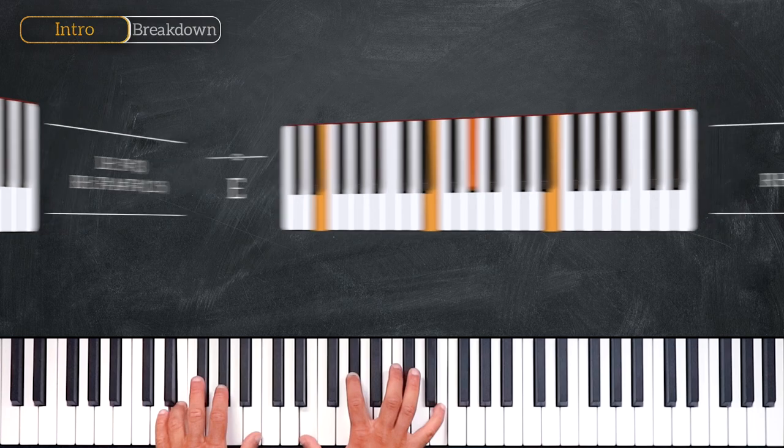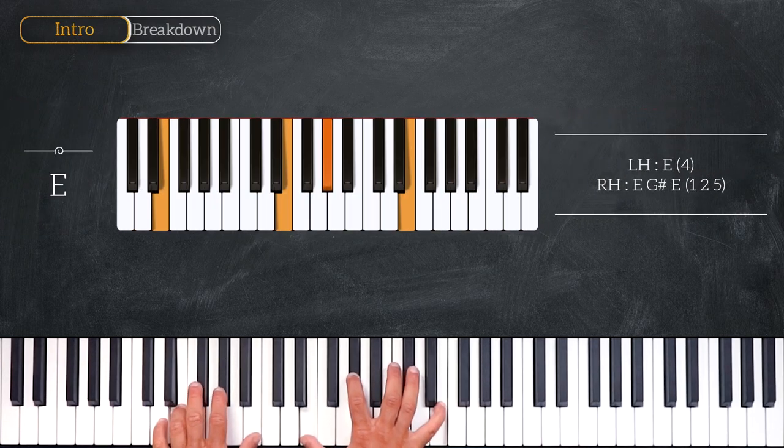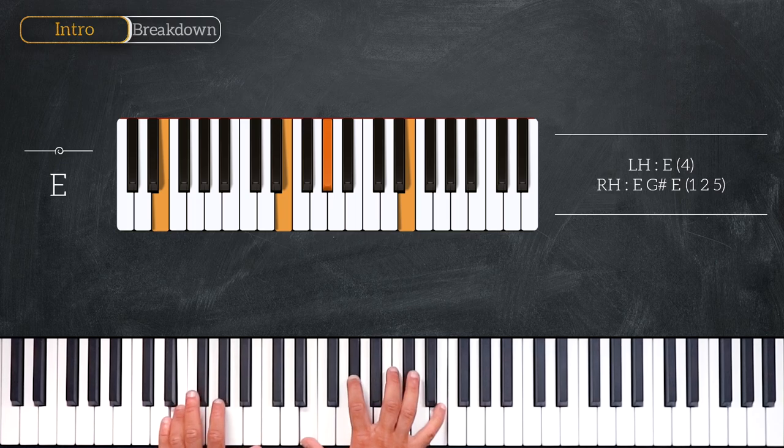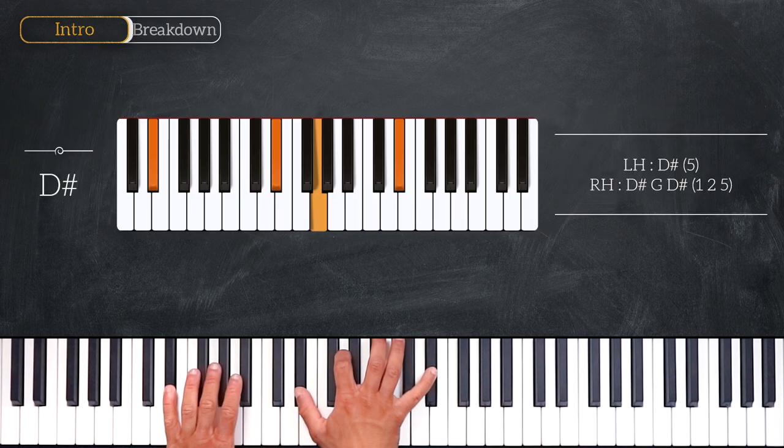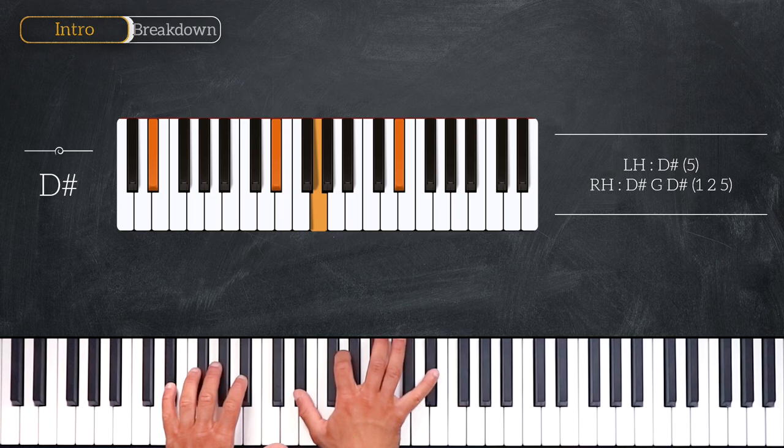Right after we'll play this E-major chord playing E on the left, E, G-sharp, E on the right hand. And we'll finish on this D-sharp chord playing D-sharp on the left, D-sharp, G, D-sharp.